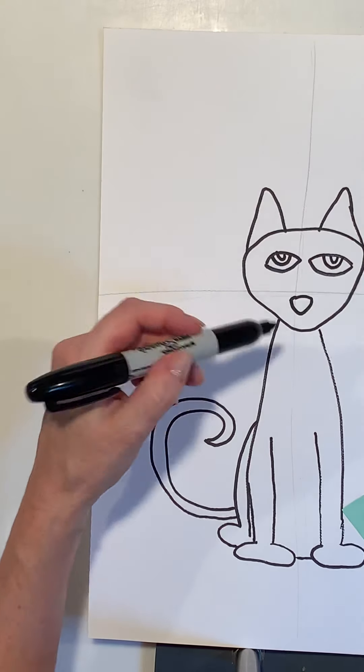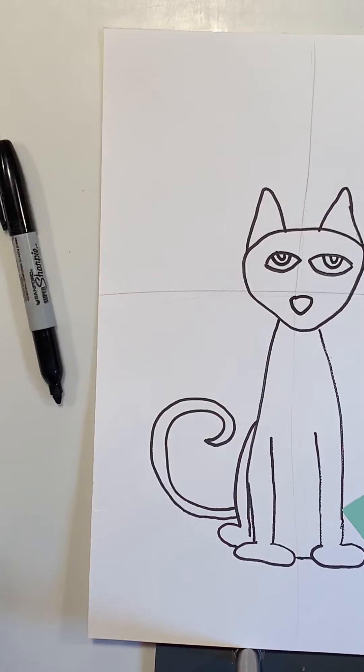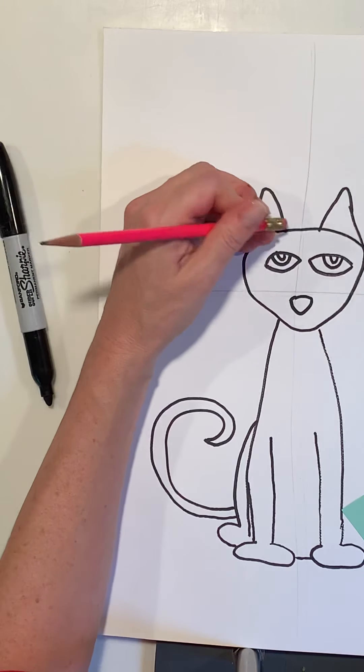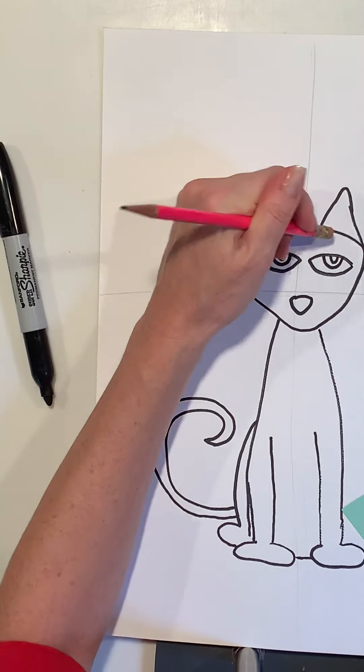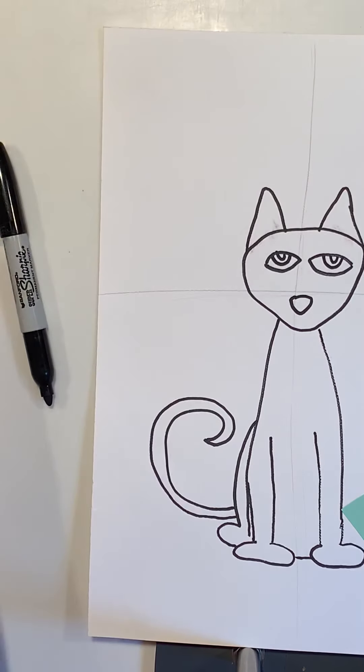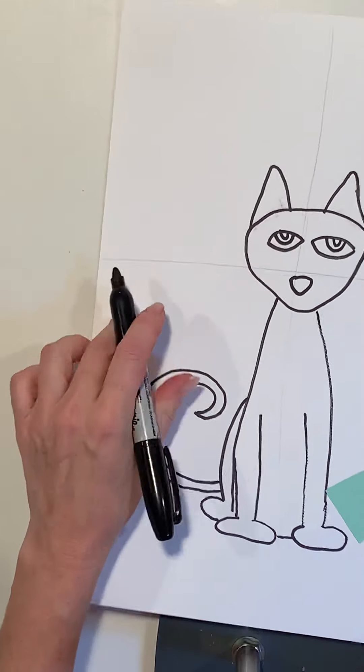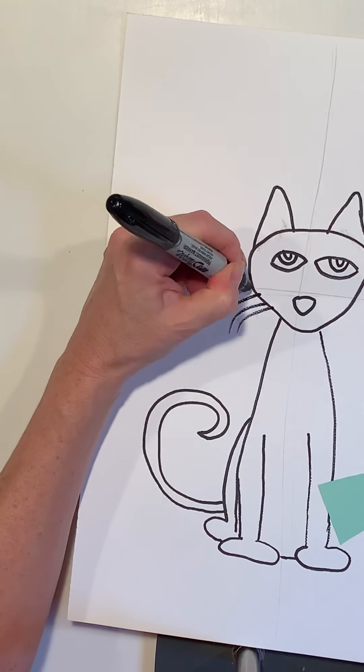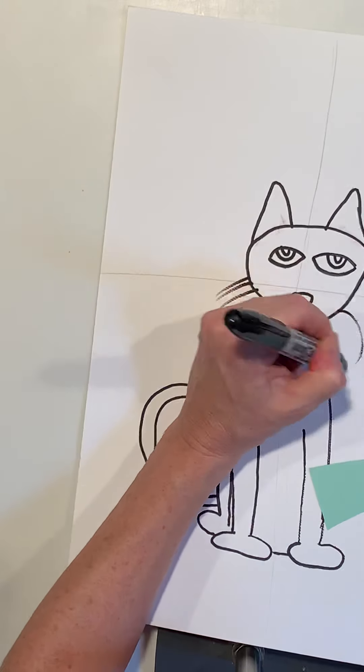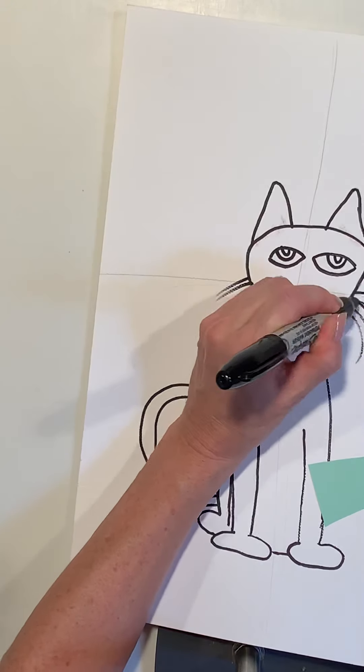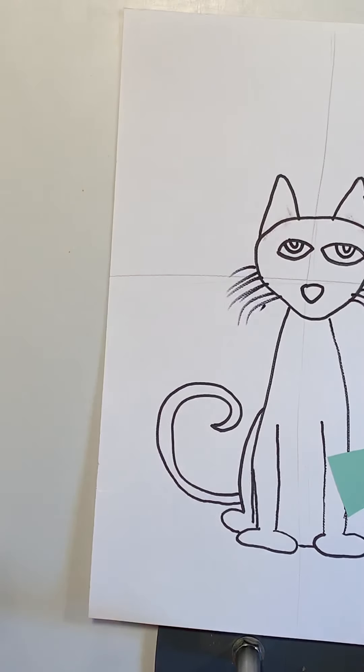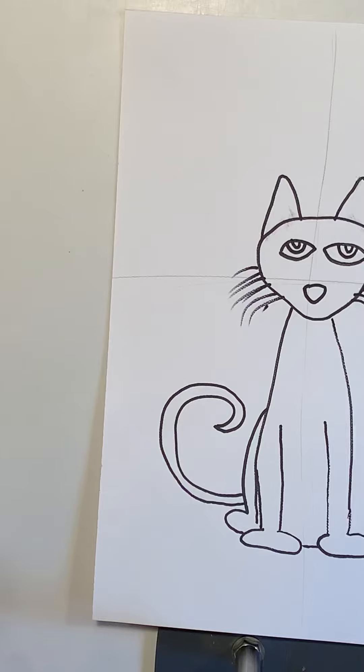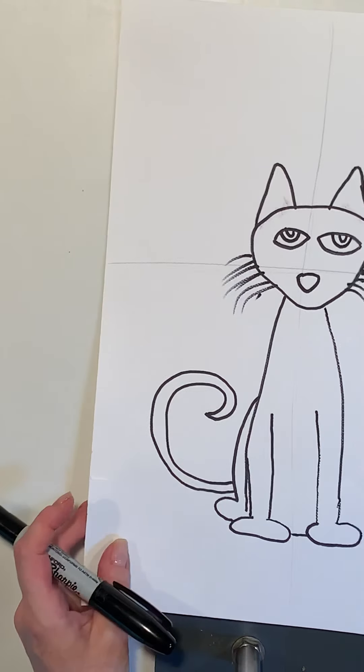Now what you can do before you trace yours with sharpie is you can erase these lines here. I can't because it's sharpie, but you can erase these lines here so that way they don't show. And then you can put in his whiskers. Now his whiskers are kind of light and fluffy, so you want to kind of do it quickly and they're all different sizes. All right, there's my Pete.